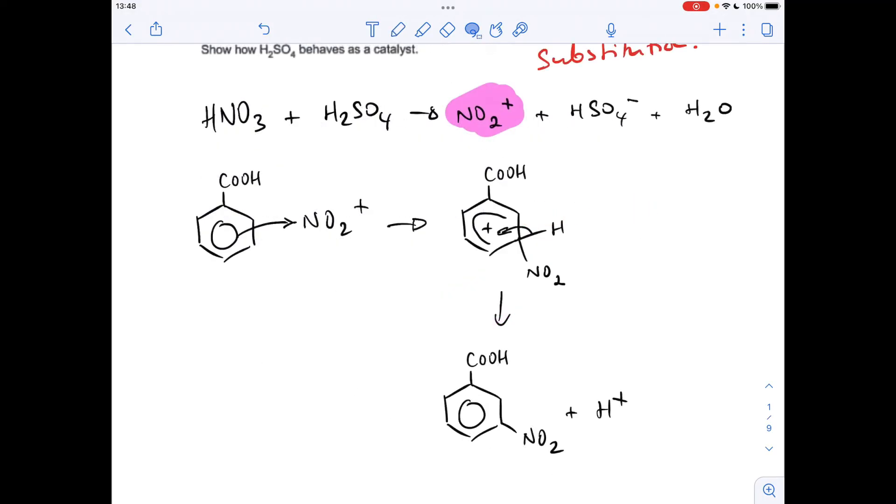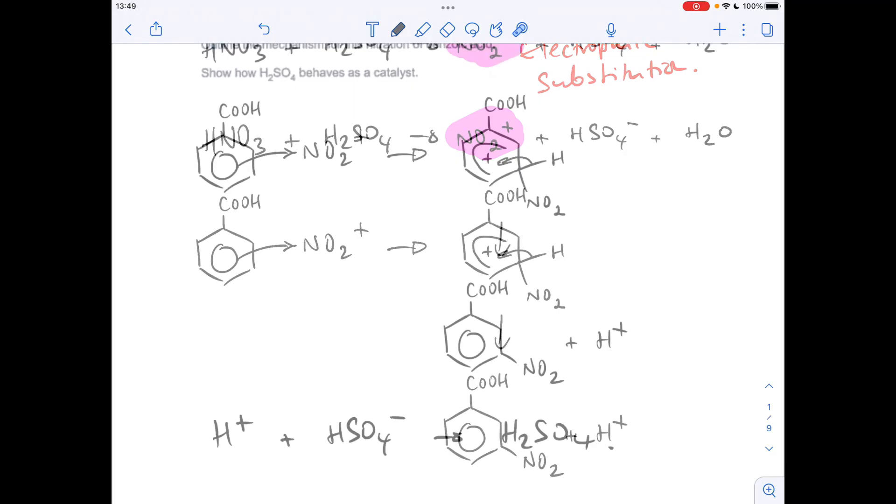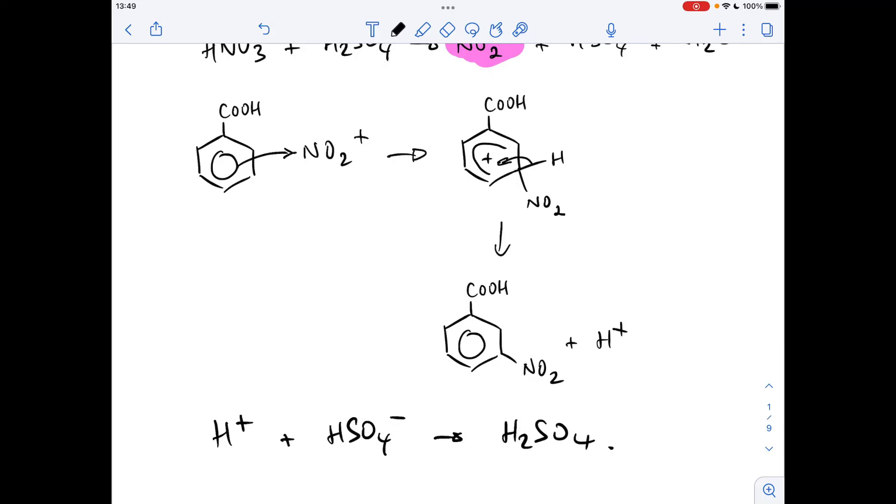So that's them there, and then the final thing we've got to do is show how the sulfuric acid behaves as a catalyst. So essentially, because it's a catalyst, we've got to reform it. So we're going to take the H plus ion and combine it with the HSO4 minus ion that was formed in that first reaction, and that will reform, regenerate the sulfuric acid.